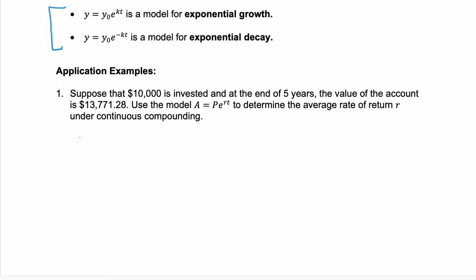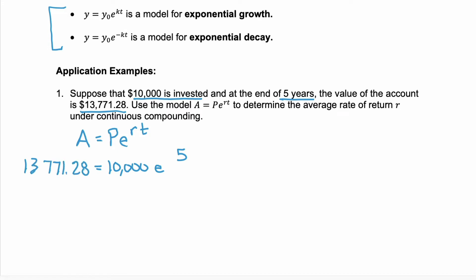So what do we know? We know our equation is A equals P·e to the R·t. We're told $10,000 is invested — that's the initial amount invested, so that'll be our P. E is a constant, an irrational number. We're told at the end of five years, so that's our time t. The value of the account is $13,771.28, and we're trying to find R.